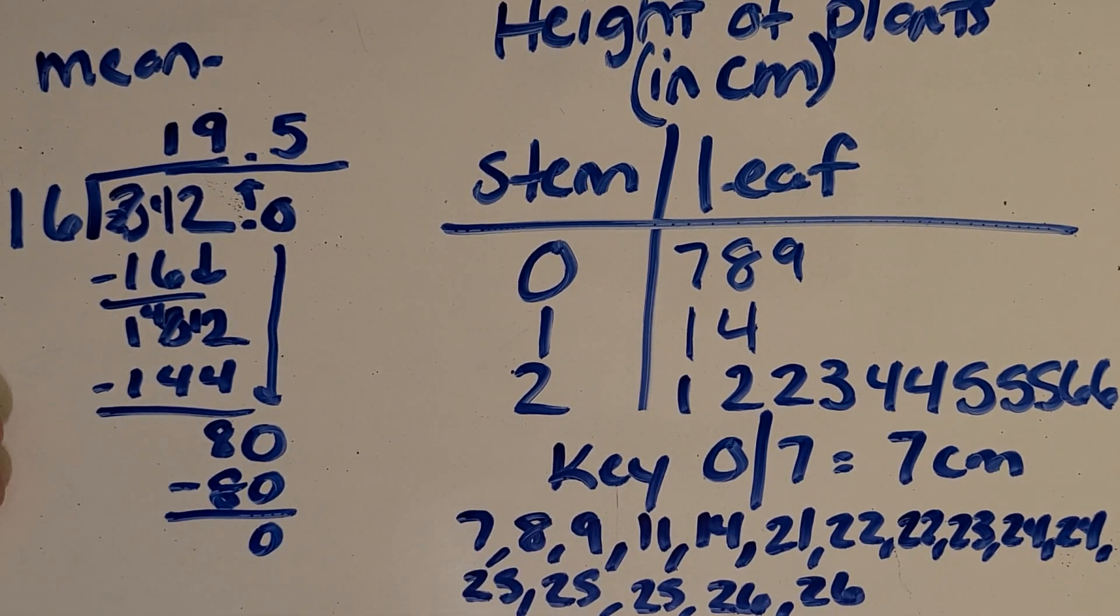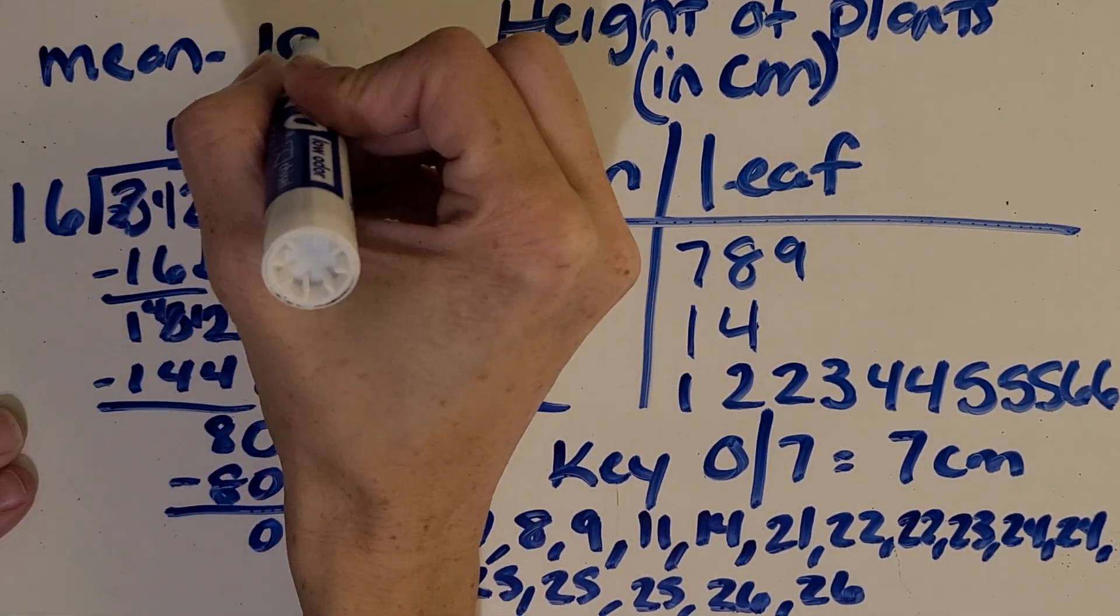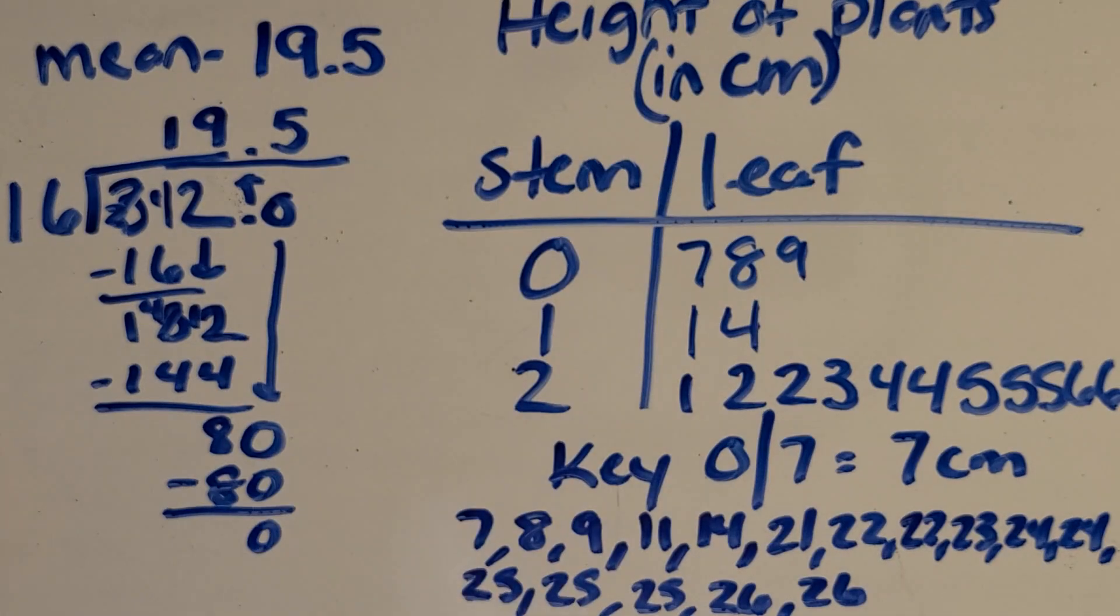Let's see if we got the same thing as the total for all of these numbers. So I got a 19.5 or 19 and 5 tenths as my mean or average. So the average plant height is 19.5.